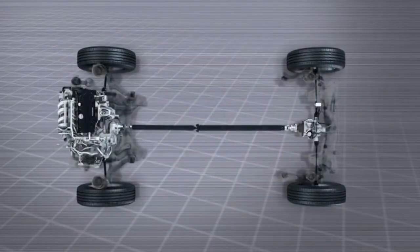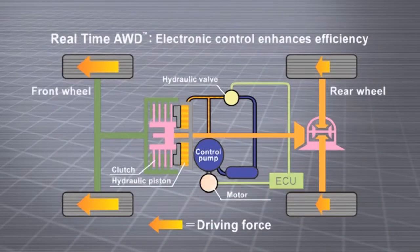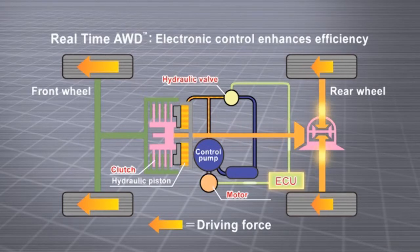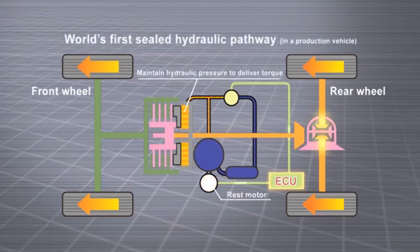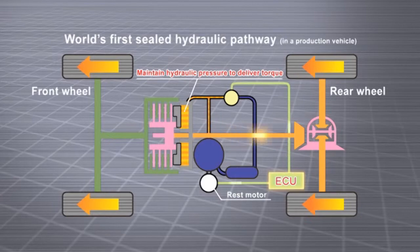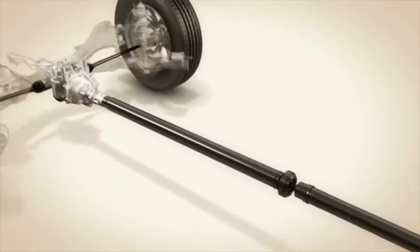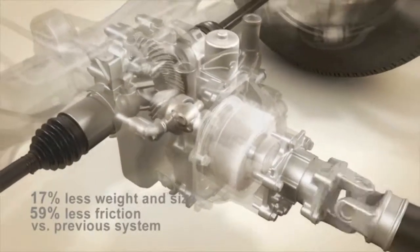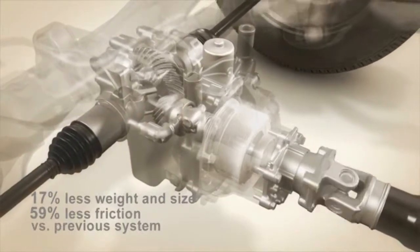This makes possible variable control of the clutch. Thanks to electronic control, the clutch distributes optimal torque to the front and rear wheels, resulting in greatly enhanced efficiency. The system also features a sealed pathway to maintain hydraulic pressure and minimize motor operation. Thanks to this advanced design, the new system features greatly reduced weight, size, and friction.